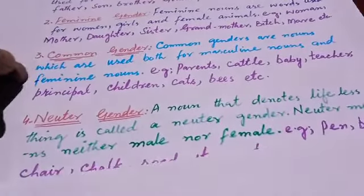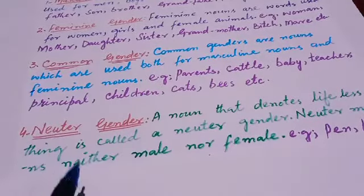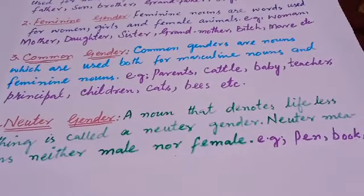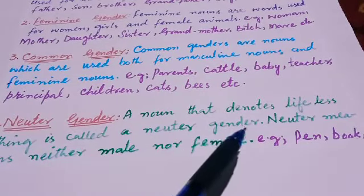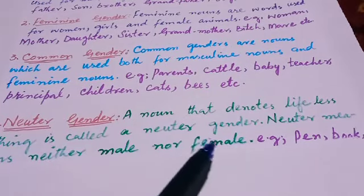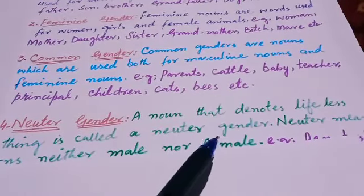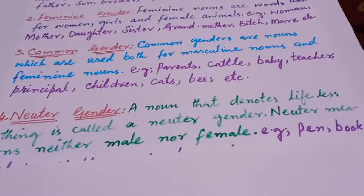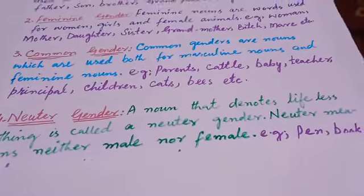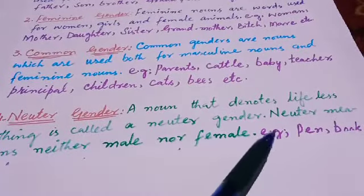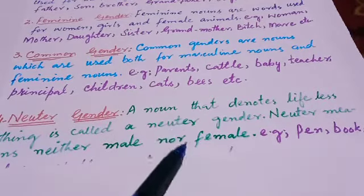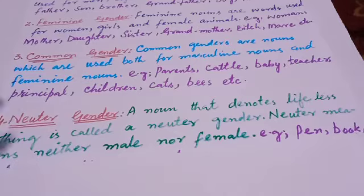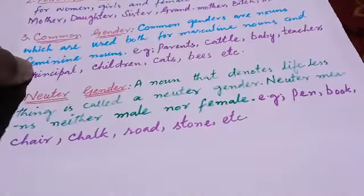The fourth part is neuter gender. Neuter gender کا مطلب ہوتا ہے نامذکر اور نامونث — یعنی کہ نہ یہ مذکر ہوتا ہے نہ مونث۔ A noun that denotes lifeless things is called a neuter gender. Neuter means neither male nor female.